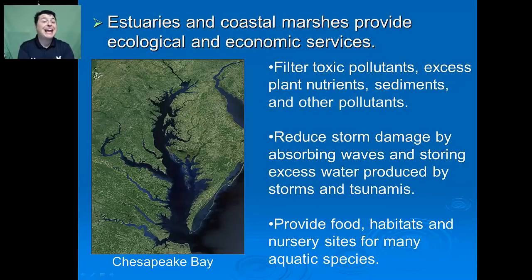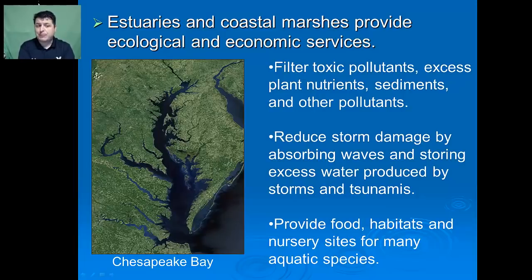These estuaries and coastal marshes provide many ecological and economic services. They filter toxic pollutants, excess plant nutrients, and sediments coming from the land. They are able to reduce storm damage by absorbing waves and storing excess water produced by storms and tsunamis. They are also an excellent source of food, habitat, and nursery sites for many aquatic species.